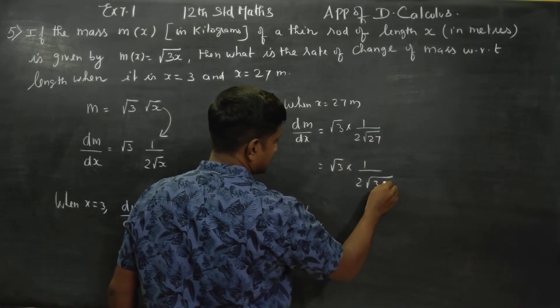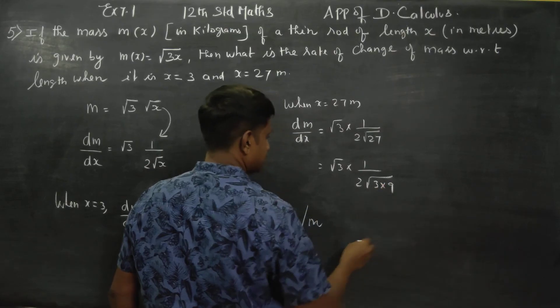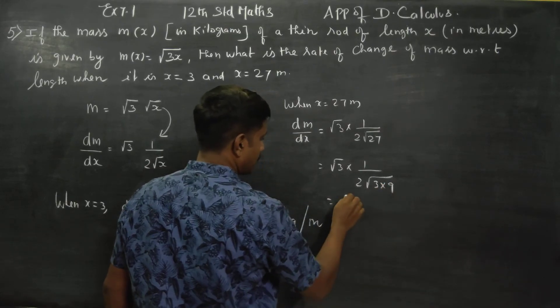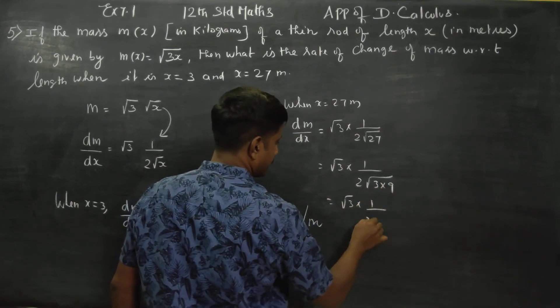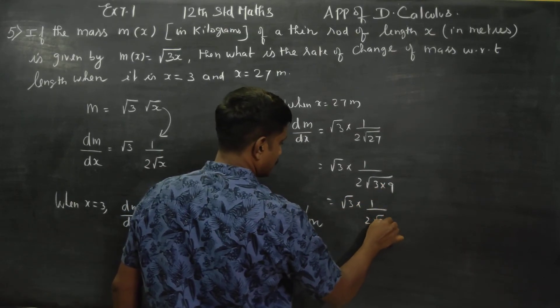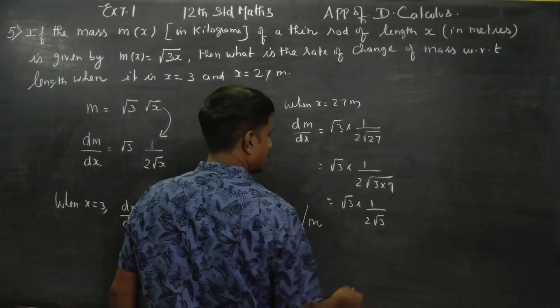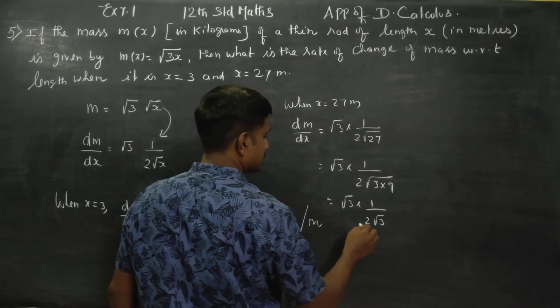27 can be written as 3 × 9. So √27 = √3 · √9 = 3√3. Then √3 · 1/(2 · 3√3) — root 3 cancels — giving 1/6.